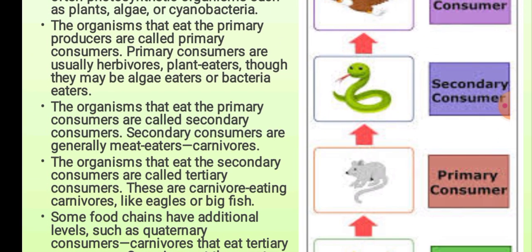The organisms that eat the primary producers are called primary consumers. Primary consumers are usually herbivores. The organisms that eat the primary consumers — secondary consumers — are generally meat eaters, or carnivores.